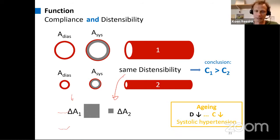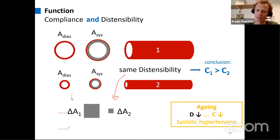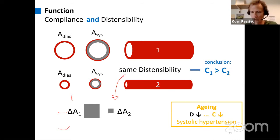With aging, a decrease in distensibility — stiffening of the wall material — will lead, in the end, to a decrease in compliance. But as the epidemiological slide showed, the real effect becomes only noticeable after age 60.